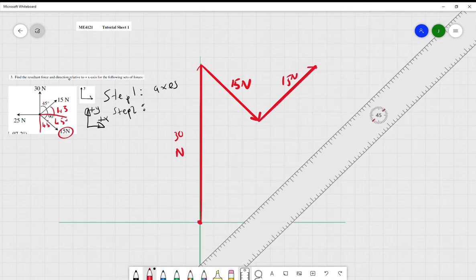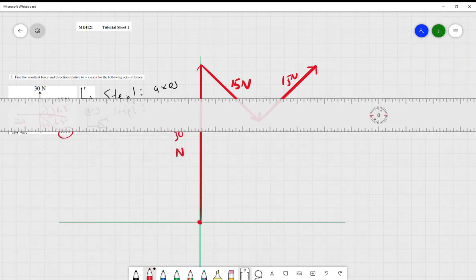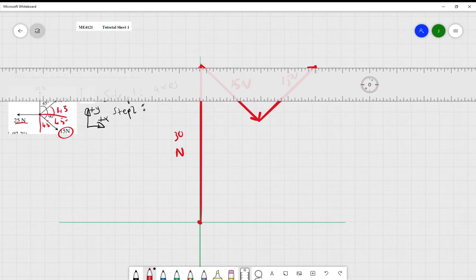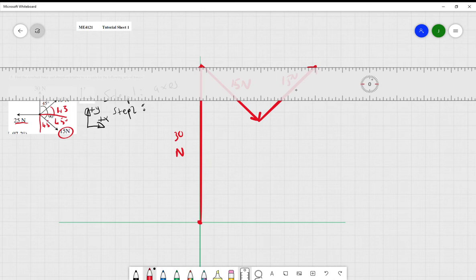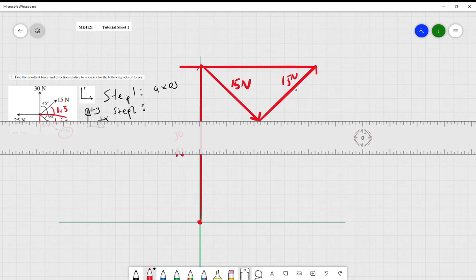This is where it ends, and then finally is the 25 newton which is going in a negative x direction. So now we just change the ruler here to zero degrees. Because the 15 newtons is just going back on itself there, we will say 5, 10, 15, 20, and then 25.